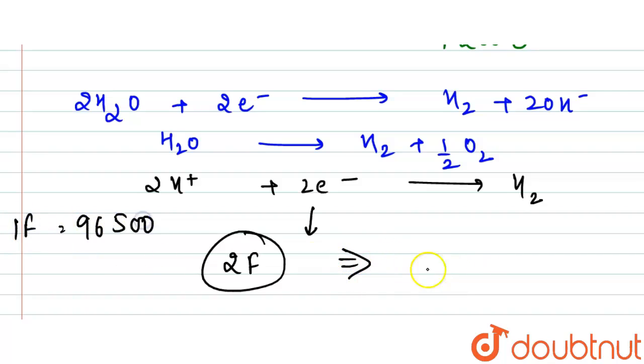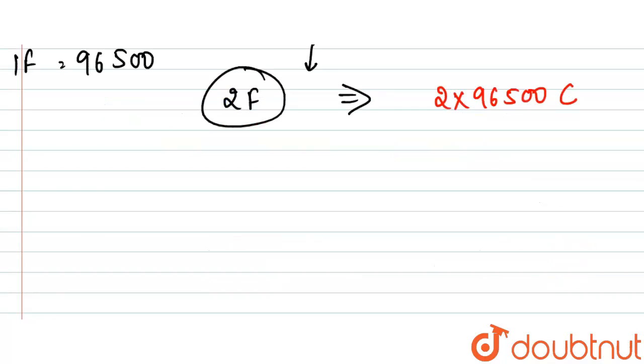One Faraday is equal to 96500. Here we will have two into 96500 coulombs. When we have two Faraday, that is two into 96500 charge, then we have 22.4 liters of H2.